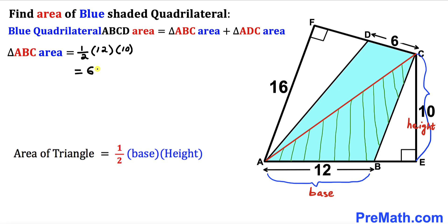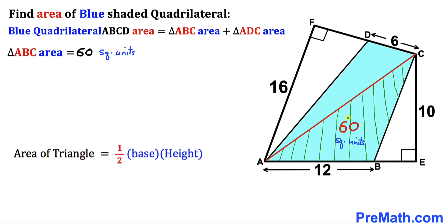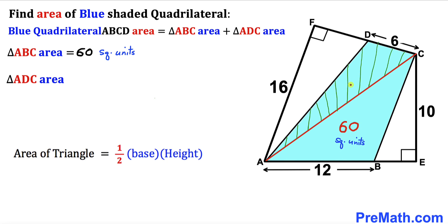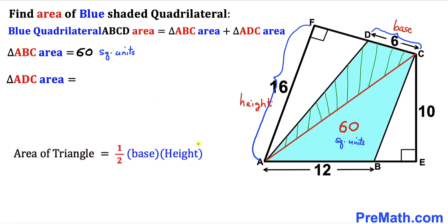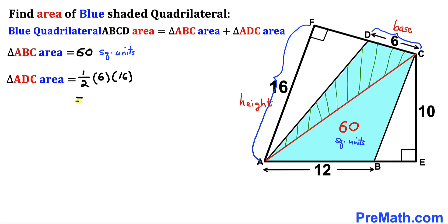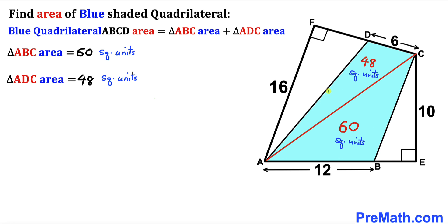Now applying the same formula to triangle ADC: the area equals one-half times base times height, where the base is 6 and the height is 16. Simplifying gives us 48, so the area of triangle ADC is 48 square units.